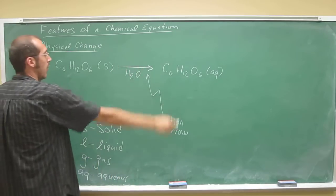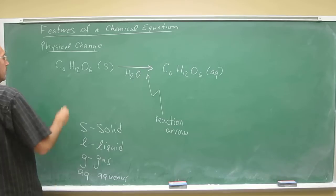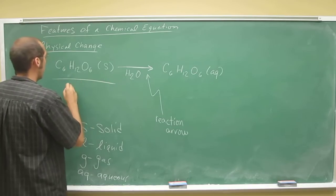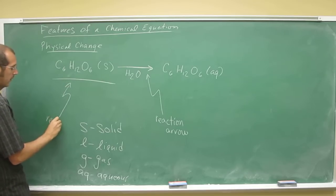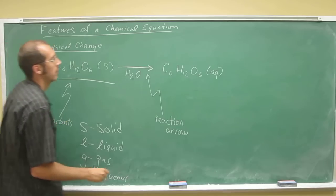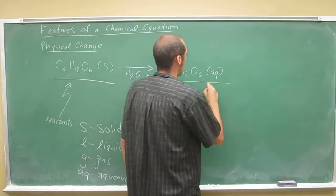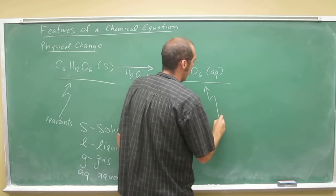So that just tells us some process occurred, something happened. To the left of the reaction arrow, we've got the reactants. To the right, we've got the products.